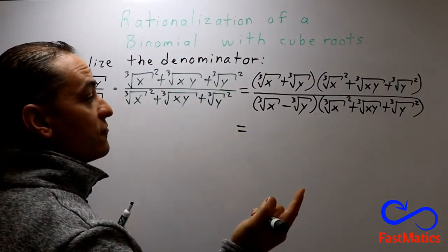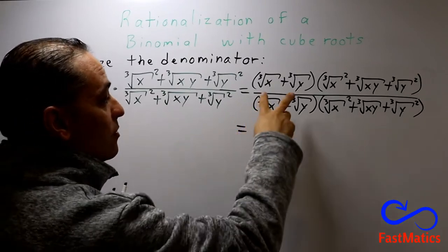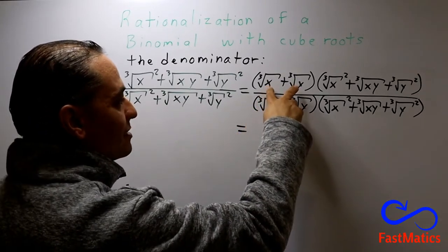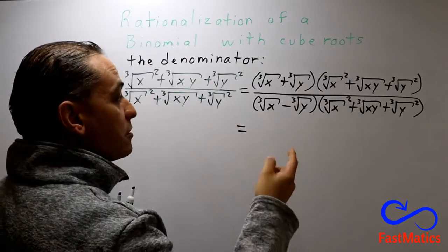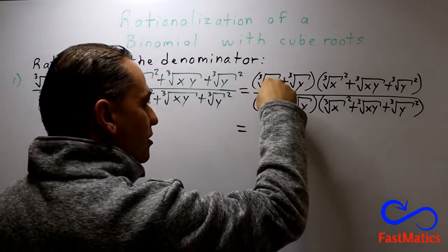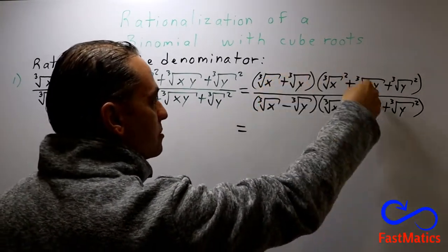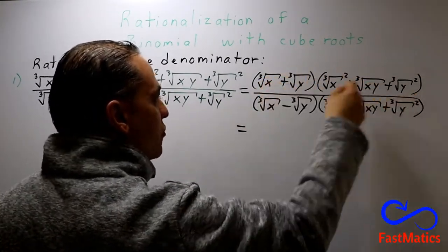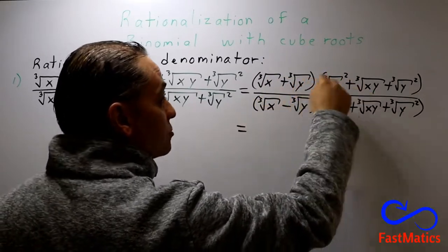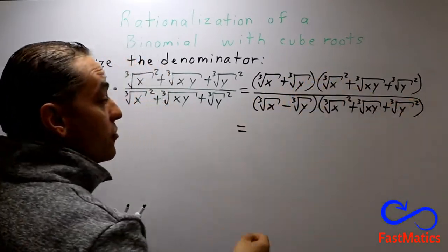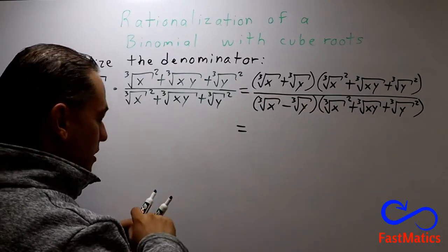And now it is very simple. You have seen that you have a polynomial times a polynomial. So, you multiply the first term by the first term, the first by the second, the first by the third, the second by the first, the second by the second, the second by the third — as in a standard multiplication of polynomials.